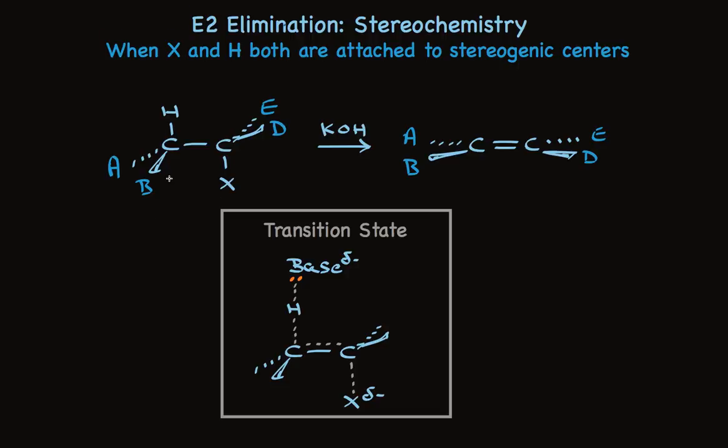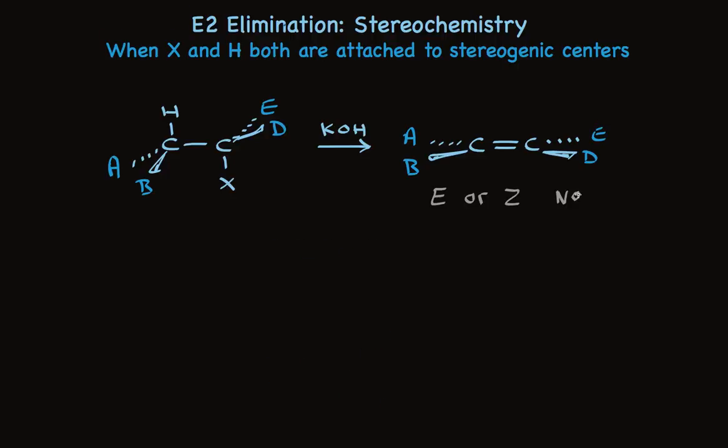This means that B, which is sticking out toward us, and D, which is sticking out toward us, will be facing each other in the product. And A and E, which are back, will both be back in the product. So now we have either E or Z stereoisomers. It does not form both stereoisomers.